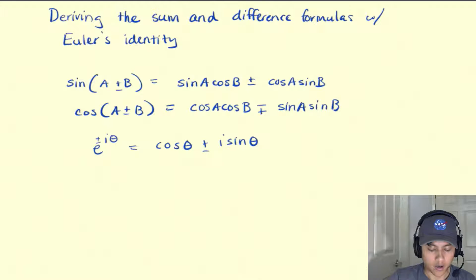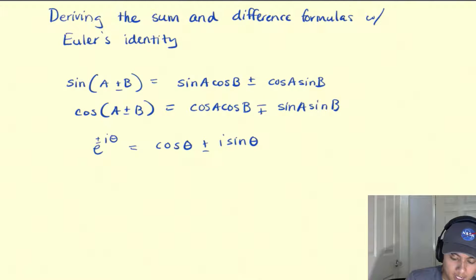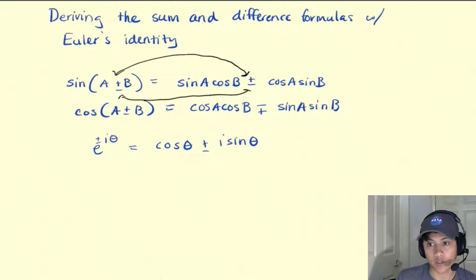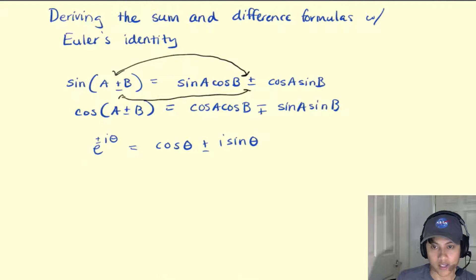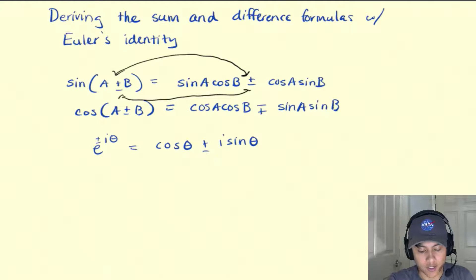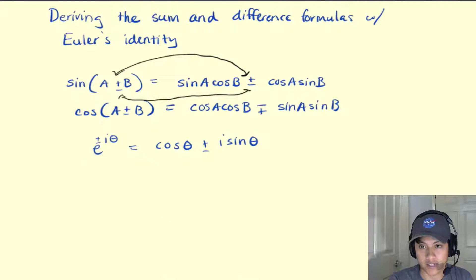If you're confused by the notation, just note that the plus or minus sign corresponds — the plus sign here corresponds to the plus sign there, and the minus sign here corresponds to the minus sign there. That says if you have an a plus b or an a minus b, this tells you which sign to use. Notice that it's flipped for the cosine term. Euler's identity is e to the plus or minus i·theta equals cosine of theta plus or minus i·sine theta.